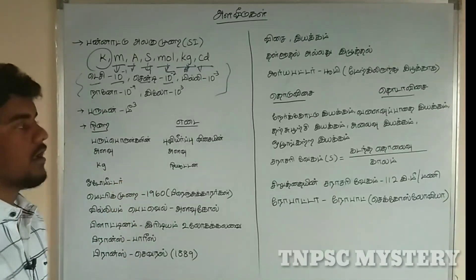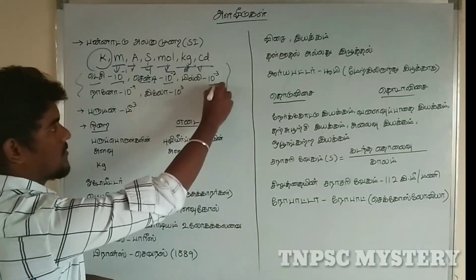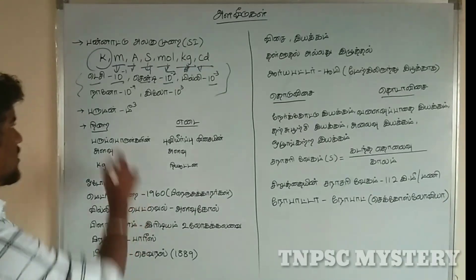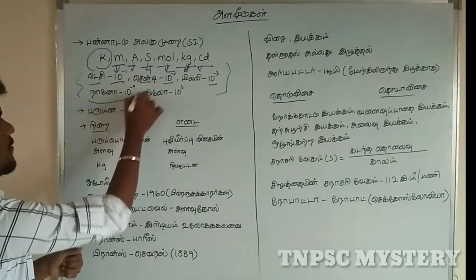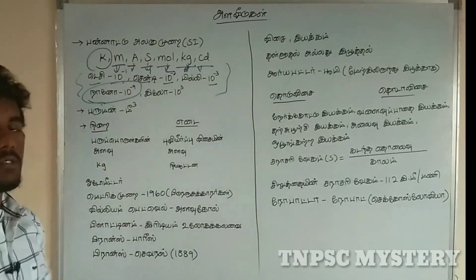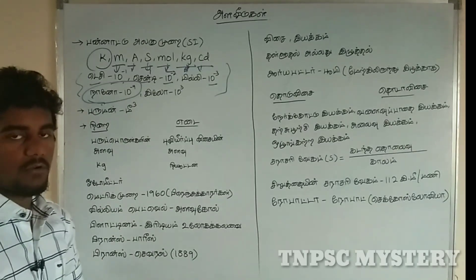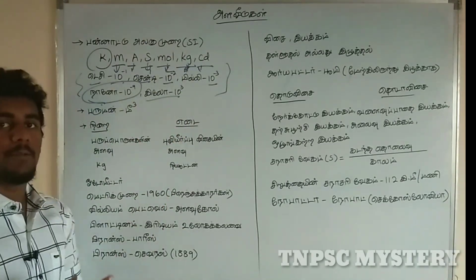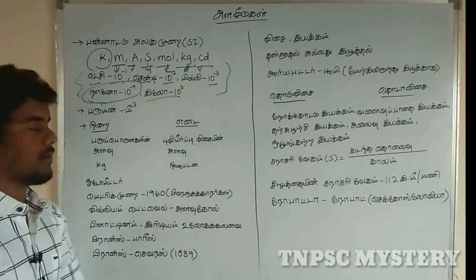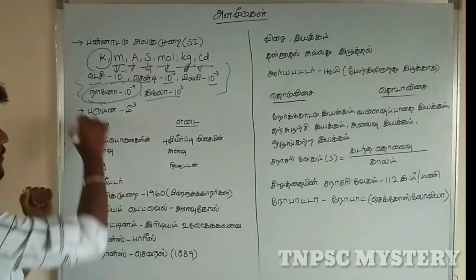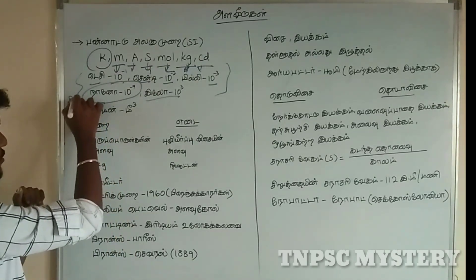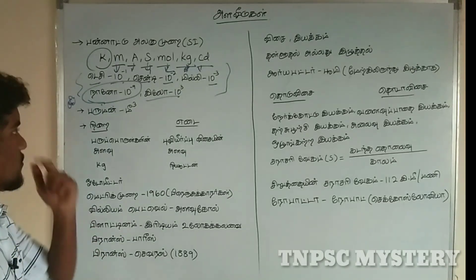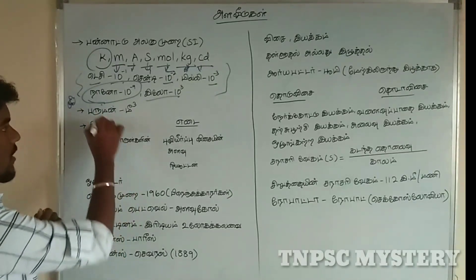1 mm is equal to 10 power minus 3. So importantly, 1 nanometer is equal to 10 power minus 9 meter. Then 1 kilometer is equal to 10 power 3 meter. So these values are important.